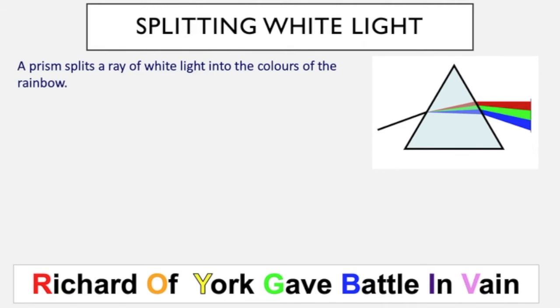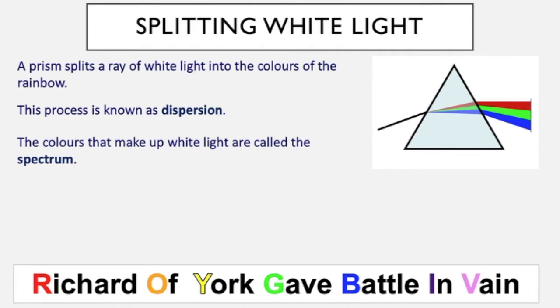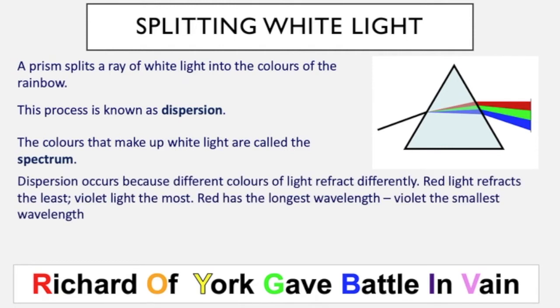So a prism splits the ray of white light into the colors of the rainbow. This process is known as dispersion. The colors that make up white light are called the spectrum. Dispersion occurs because different colors of light refract differently. Red light refracts the least, violet light the most.